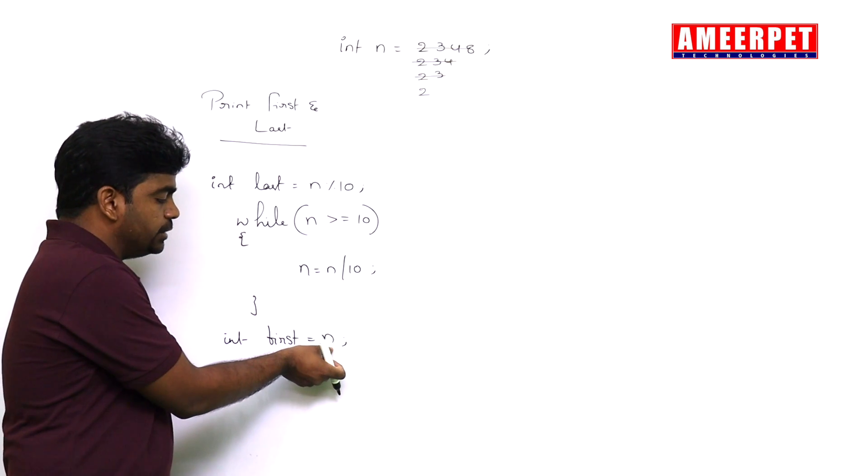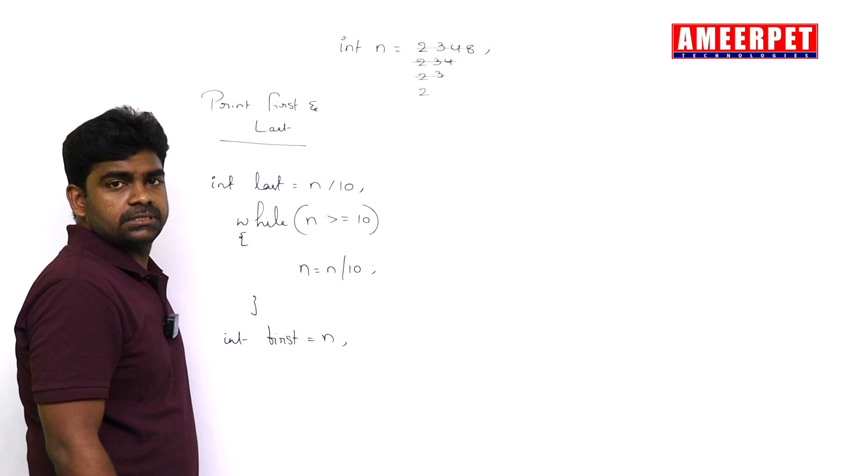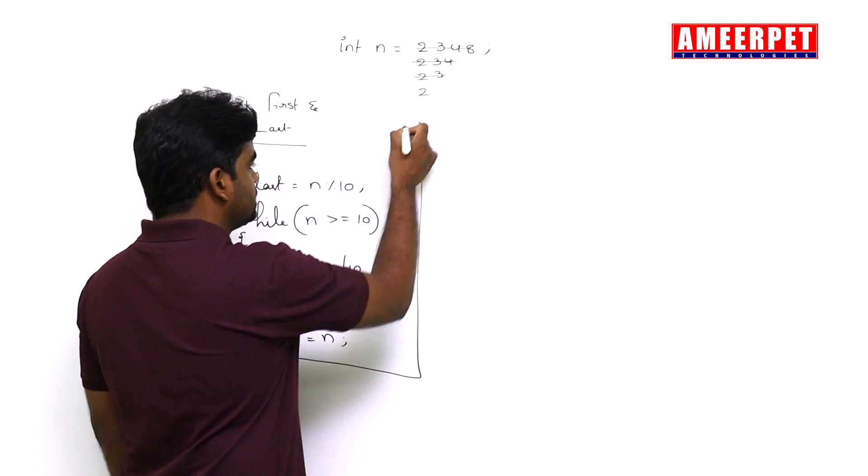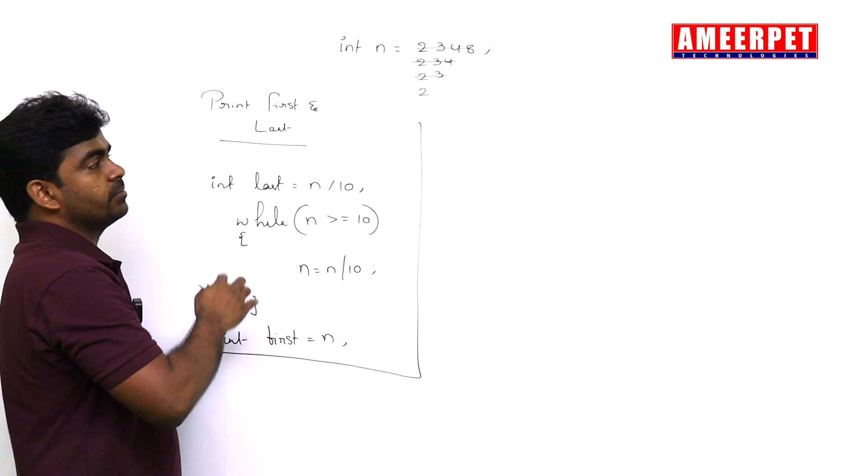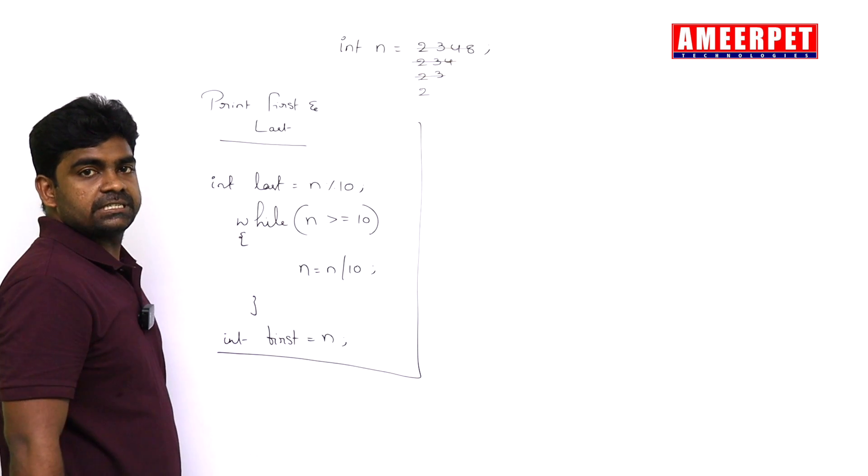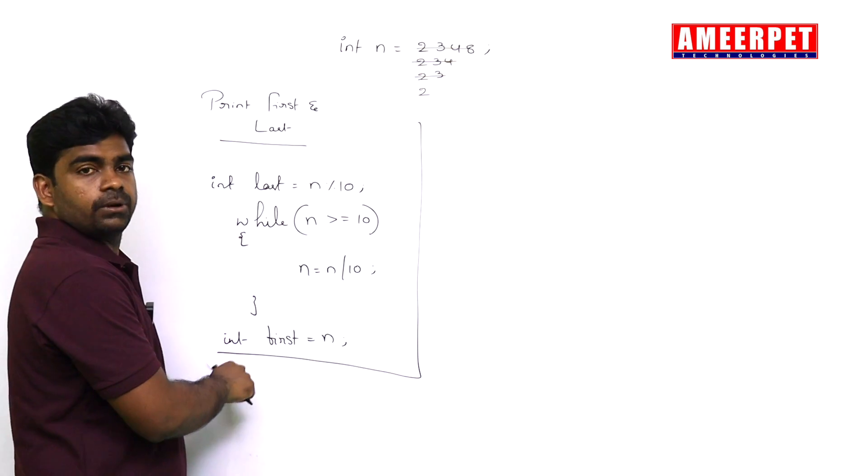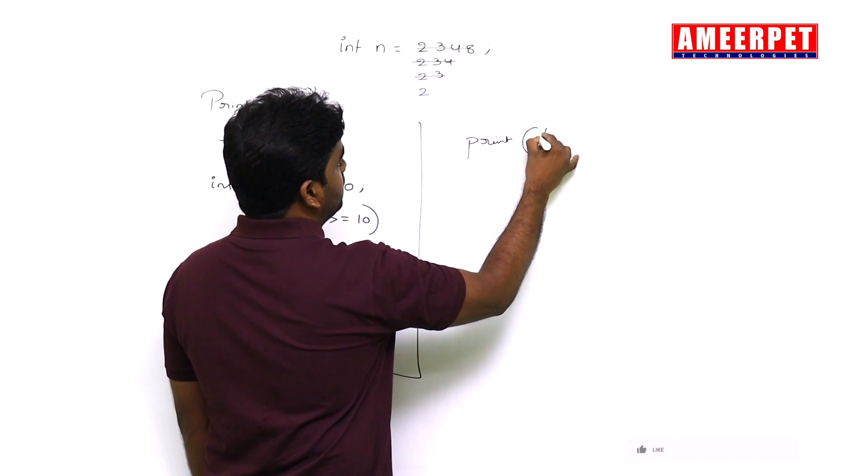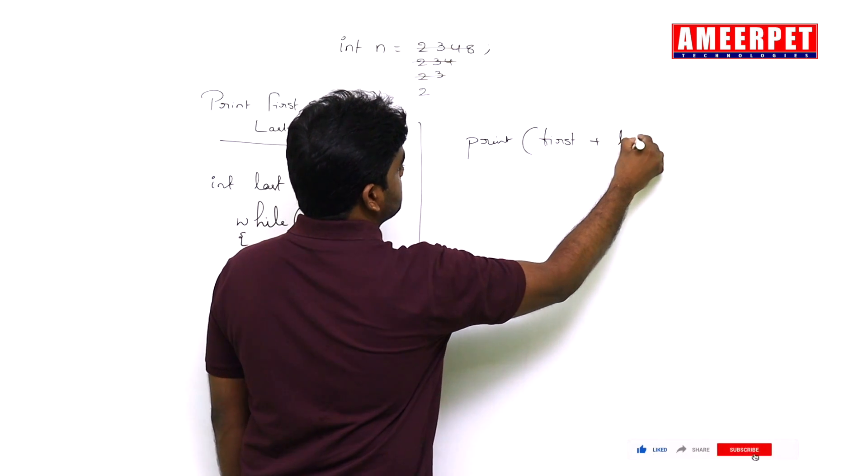That n value will come and store into first. Simple. Now the question is, you need to write the logic. This logic is common. If you want to print first and last, you need to write: print first plus last.